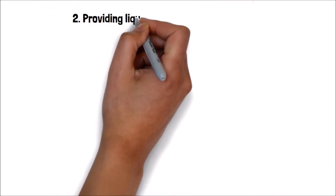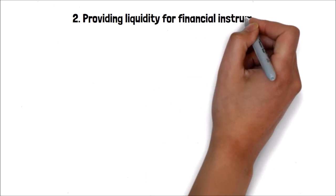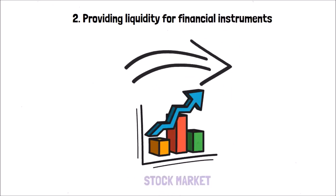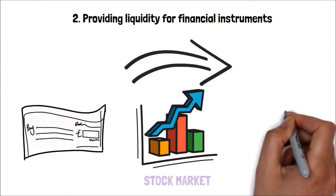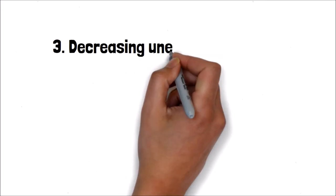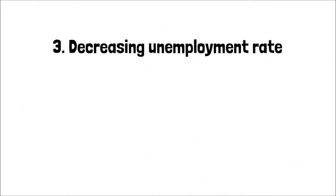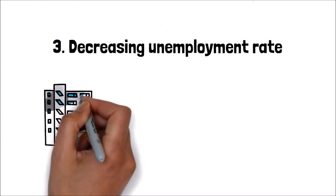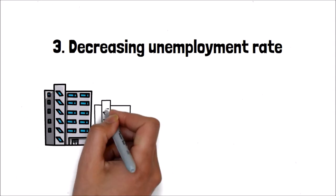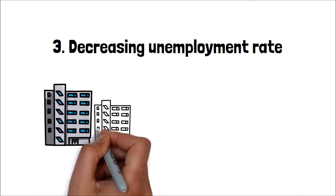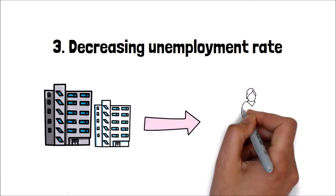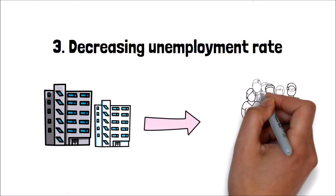Role 3: Providing liquidity for financial instruments. The financial system provides the means to convert financial instruments into cash at the lowest cost. Role 4: Decreasing the unemployment rate. The financial system allows founders and entrepreneurs to have access to easy capital to invest in projects or companies, creating more job opportunities and making the unemployment rate lower.